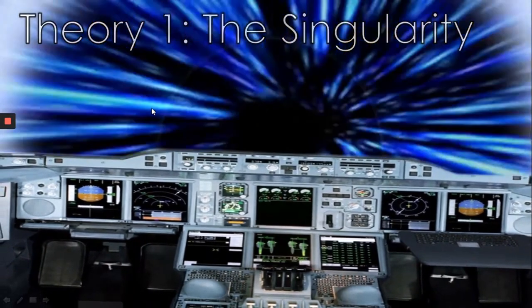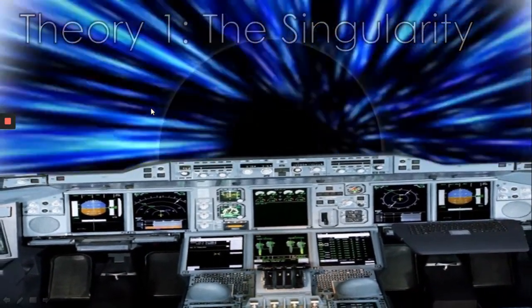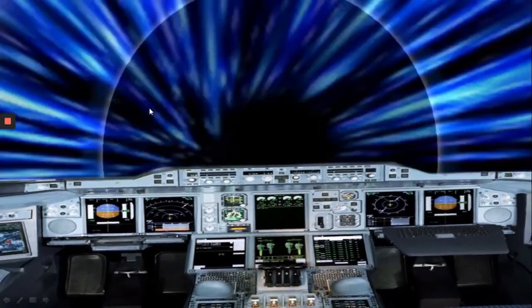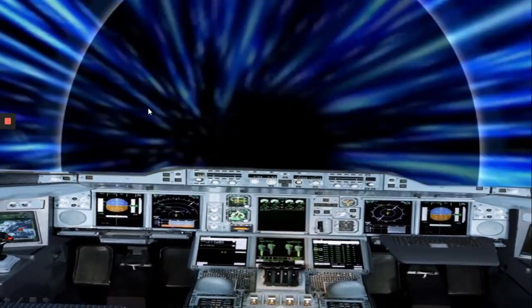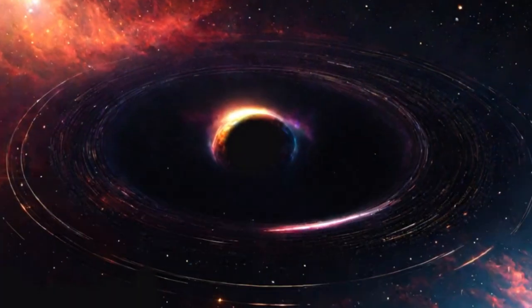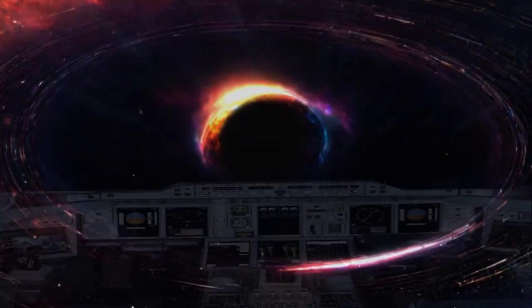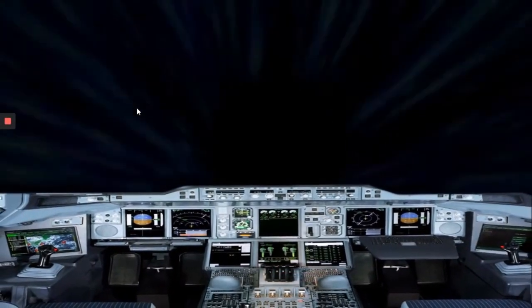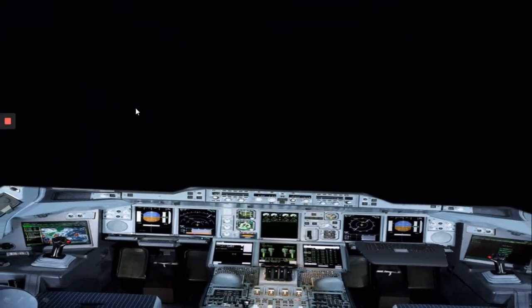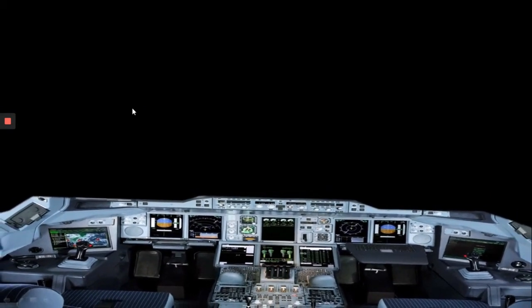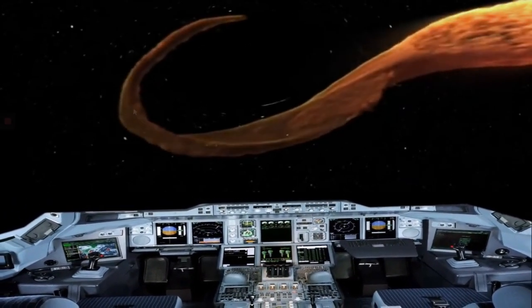In theory 1 we approach the singularity, a ring to pierce, also known as a ringularity. Of zero volume it contains all the mass of this black hole. Our clocks slow and stop. Slowly and surely we freeze. Our mass infinitely spread over zero dimensions. Even our indestructible aircraft is no more at this point. Known physics has declared victory.